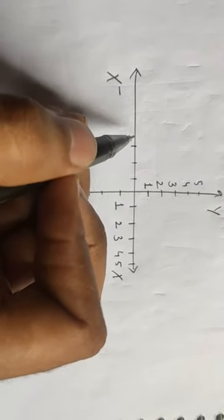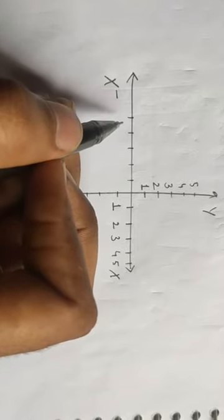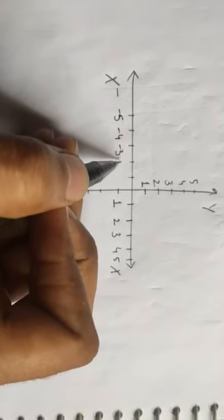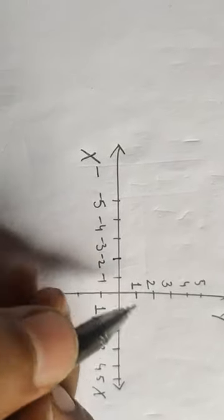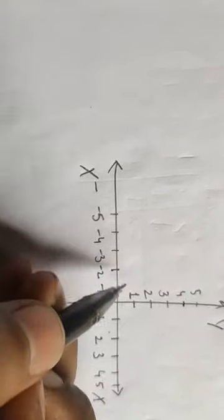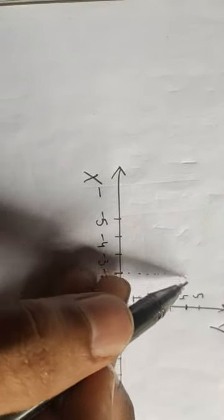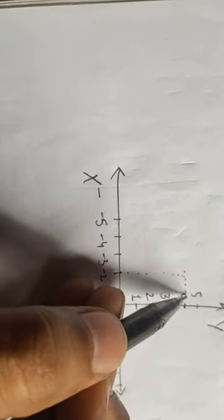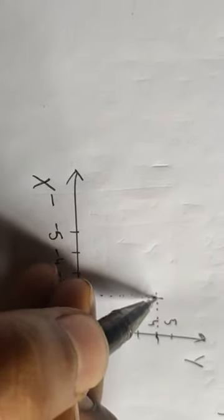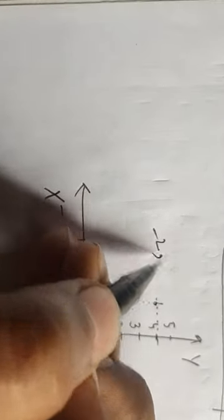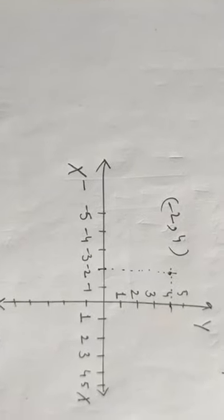Our first point is (-2, 4). We take negative 2 on the x-axis and positive 4 on the y-axis. Draw a vertical line through -2 and a horizontal line through positive 4. By joining these lines, we obtain a single point, and this single point represents (-2, 4). This is your required representation of the point.